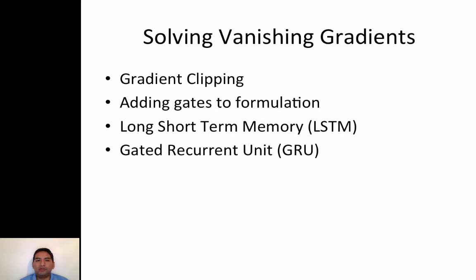To deal with that problem, we use gradient clipping to prevent exploding gradients. Another solution is to add gates to the formulation. The Long Short-Term Memory is a memory unit that uses several gates to avoid the vanishing gradient problem. The Gated Recurrent Unit is a newer unit that also tries to prevent this problem in recurrent neural networks.